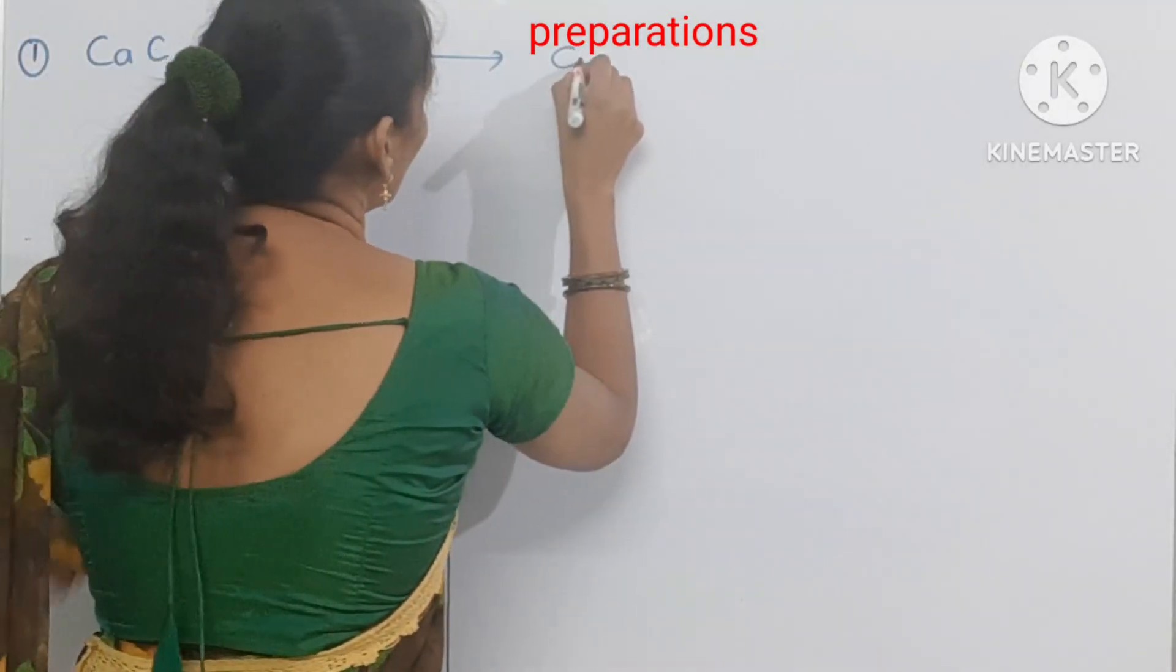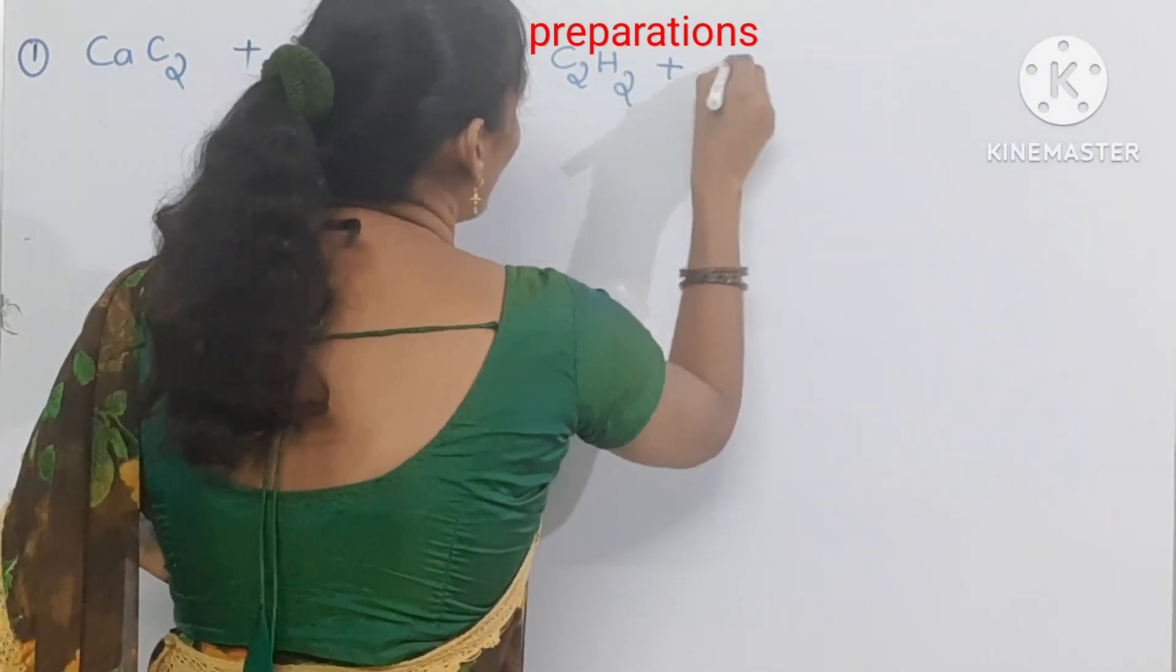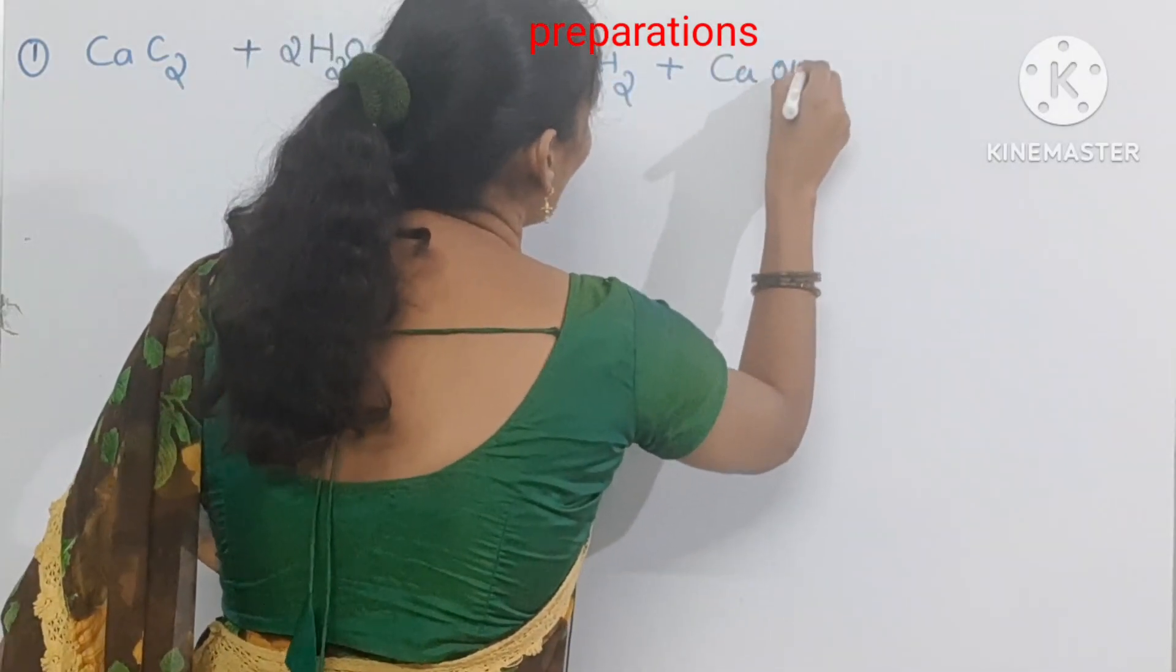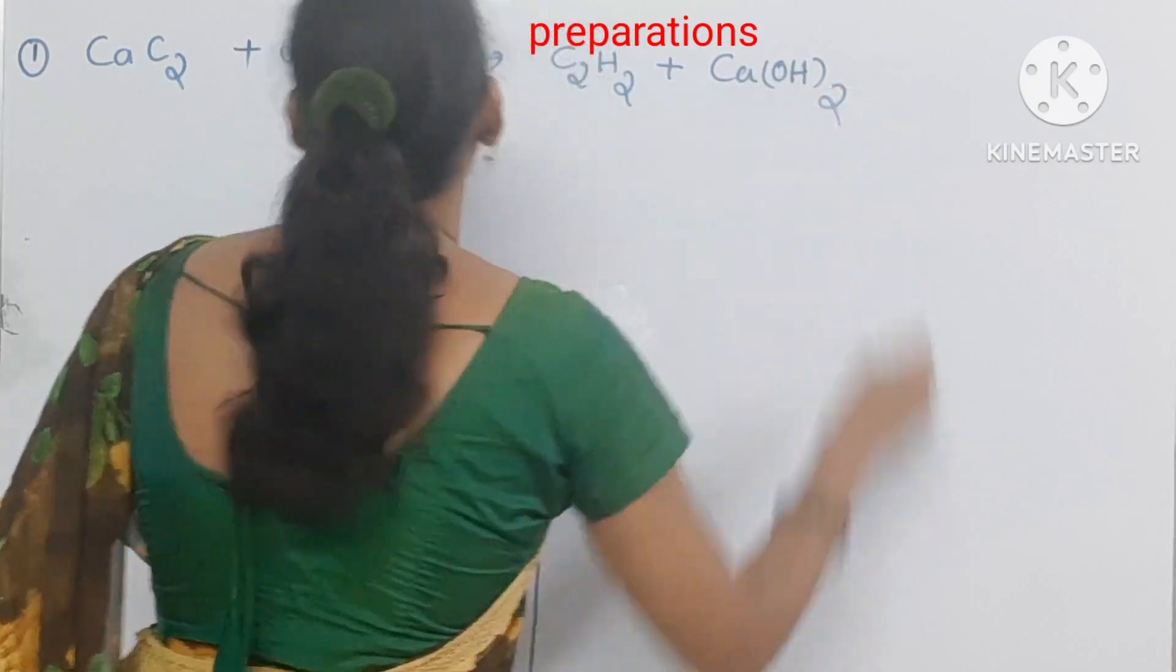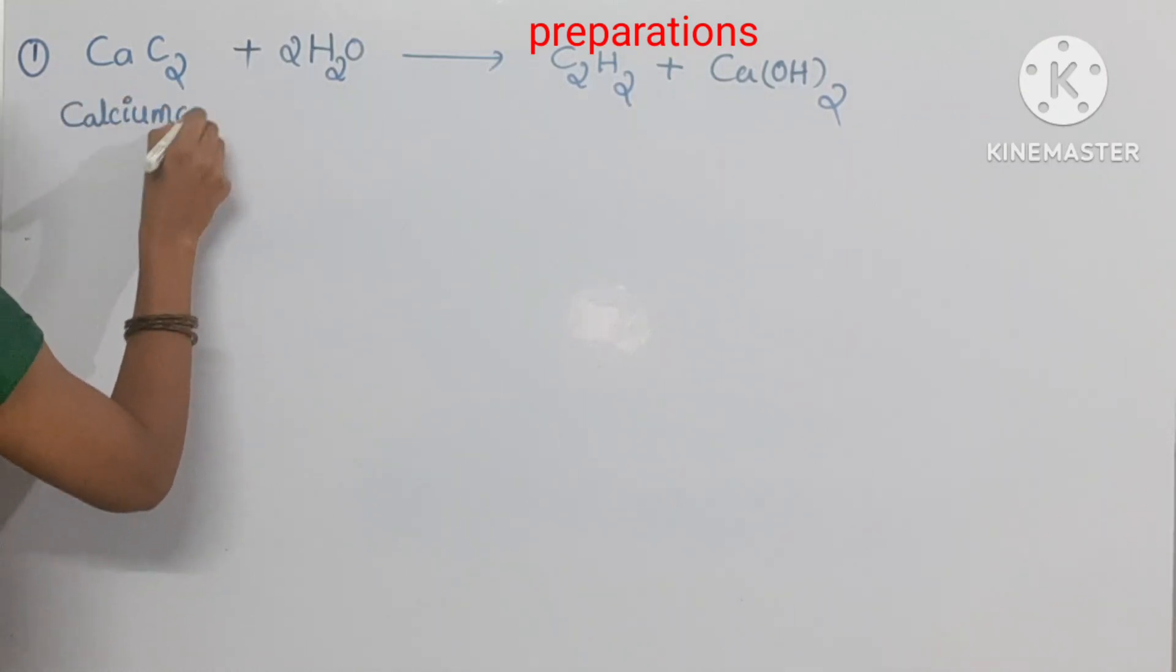Then it will give you C2H2, this is acetylene, and also the byproduct is Ca(OH)2 calcium hydroxide. This is the first preparation method and also the industrial preparation method.